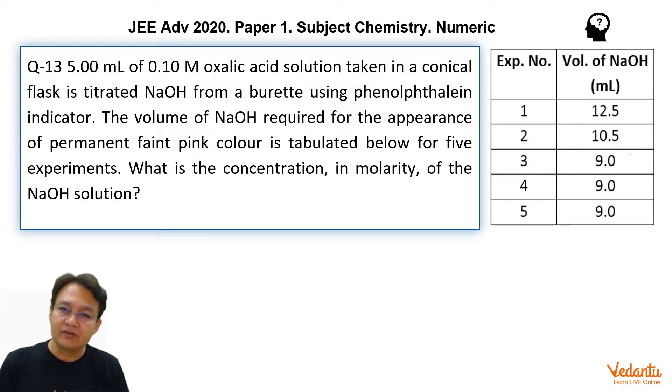So the confusion could arise whether to take average of these values. Okay, but no, no average is needed. In fact, the most precise value, if you also call it titer value, is 9. That means the volume of NaOH should be taken as 9. So I think that is the only novelty in this question, only special thing in this question, rest everything is quite simple.